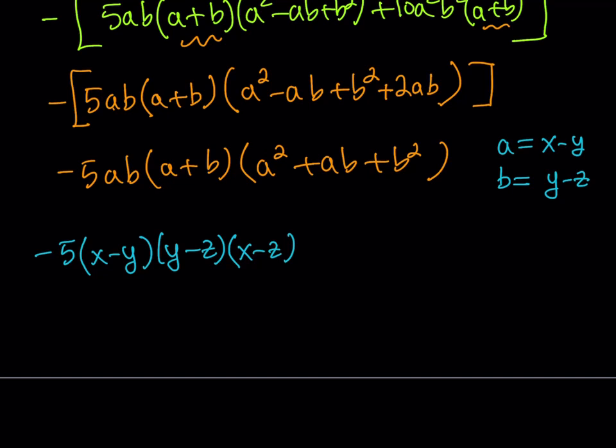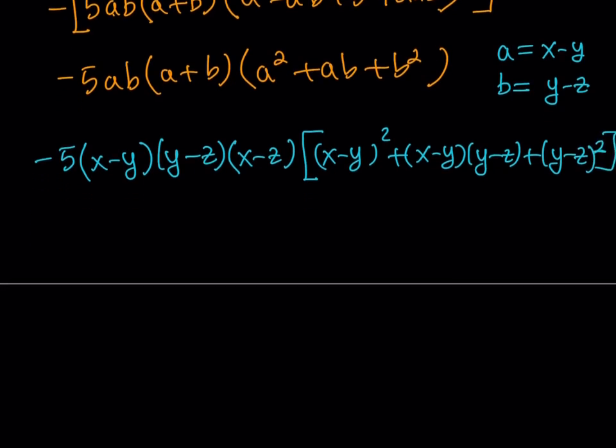What about this one? This one needs some work. a squared is going to be x minus y squared, plus a b is x minus y times y minus z, and then b squared is y minus z quantity squared. Now I can multiply the negative one by x minus z, so it looks more like our original expression: x minus y, y minus z, and z minus x.